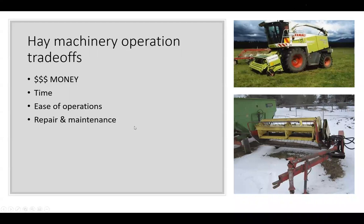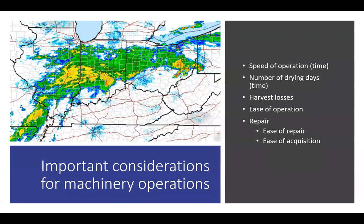With a hay bind like the New Holland 467, you could probably buy a backup machine or parts machine cost-effectively — you might have two of them and keep spare parts on hand. With something like a Class Jaguar, you can't necessarily afford a second one. Really, we have to balance money and time, and what's most important is getting the hay down and up effectively.